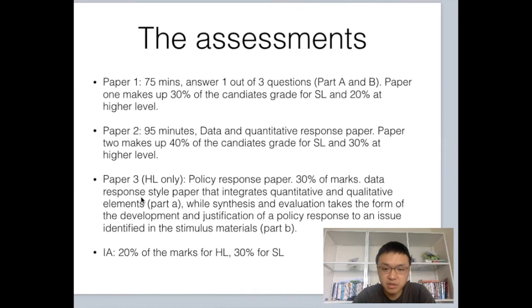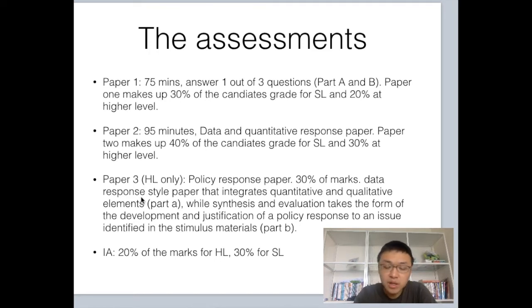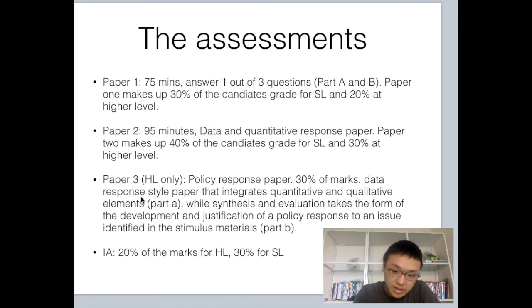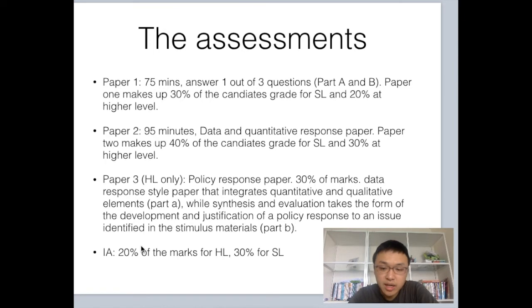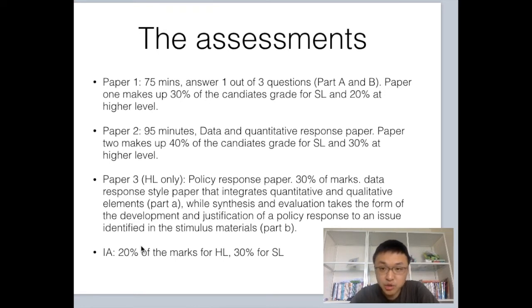Paper 3 is called the policy response paper. It's another data response paper where you will need to do math questions. They will give you quantitative questions as well as evaluation and explanation questions. Finally, you have your IA. For the IA, you need to pick your own newspaper article and write a commentary on it. It needs to be under 800 words.